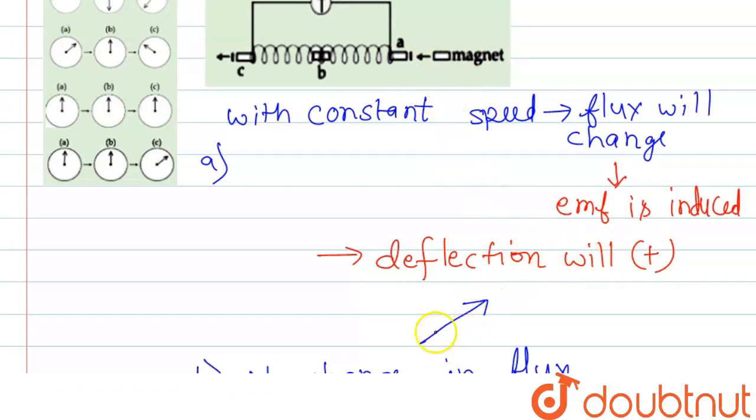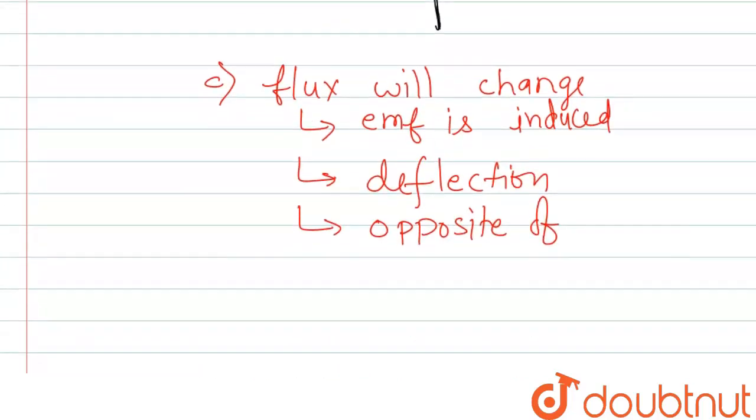So when the magnet was entering the deflection was like this. So in third case it will be opposite of the deflection while entering. So this will be like this.